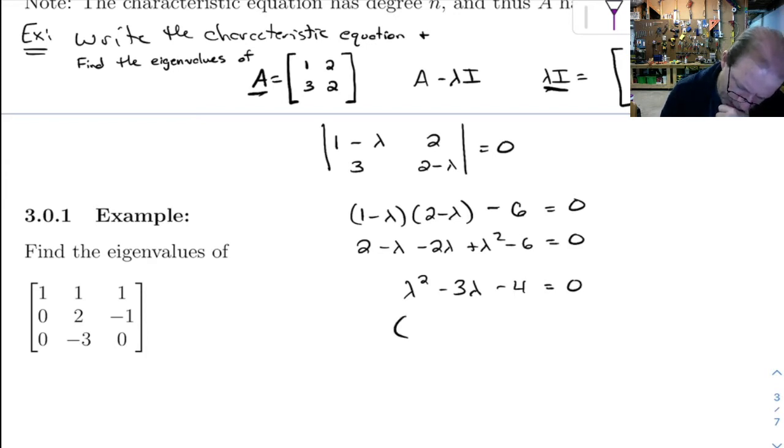And this thing, I believe, will factor. So we get, we'll factor into lambda, a 4 and a 1 here. Make that negative and that positive. This gives us lambda equals negative 1 and lambda equals 4.